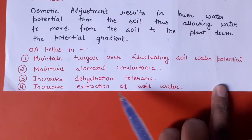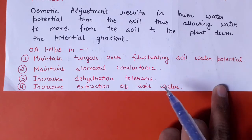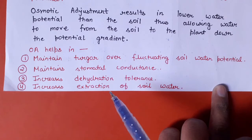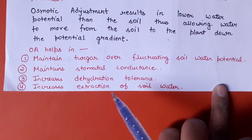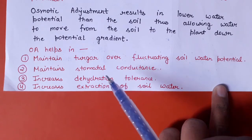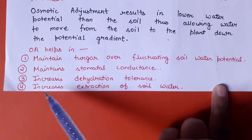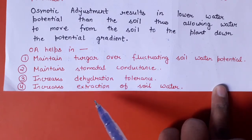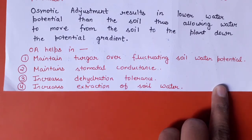Osmotic adjustment also increases the extraction of soil water. Plants accumulate osmolites in their cells and tissues, which causes the water potential to become low. When the water potential in plant tissues is lower than in the soil, water moves from the soil into the plants. This is how osmotic adjustment increases the plant's ability to extract water from the soil.